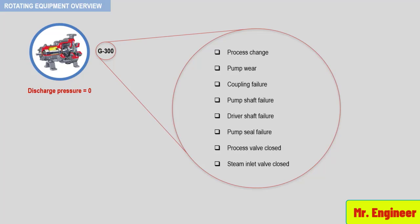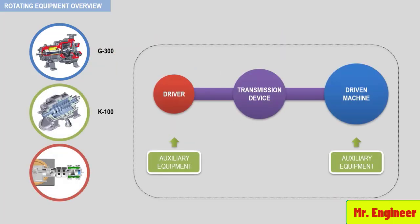Do you get the point? What I want you to remember and understand is that the entire unit or train — all four machinery classifications — must always be considered in rotating equipment during design, revamps, troubleshooting, and inspection.